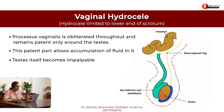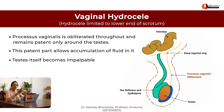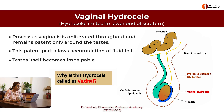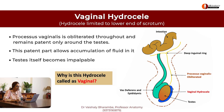Now let's see what happens and how hydroceles are formed with an embryological basis. Here what you're seeing is a vaginal hydrocele. What has happened? The processus vaginalis is obliterated, but the portion of it which is surrounding the testes becomes quite large, allowing for accumulation of fluid — so much fluid accumulation that the testes is almost not palpable. This is called a vaginal hydrocele. Why is it called vaginal? Because it is formed in the tunica vaginalis.